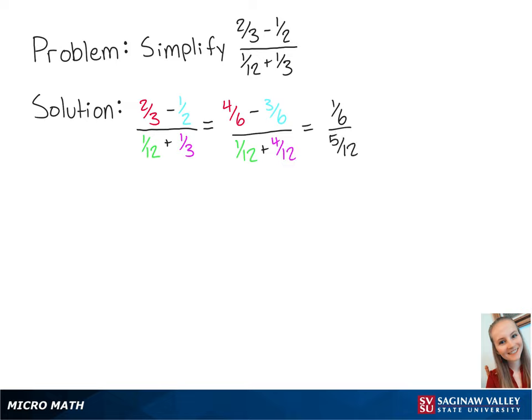To divide these fractions, we can multiply the numerator by the reciprocal of the denominator. So this equals 1 sixth times 12 fifths.